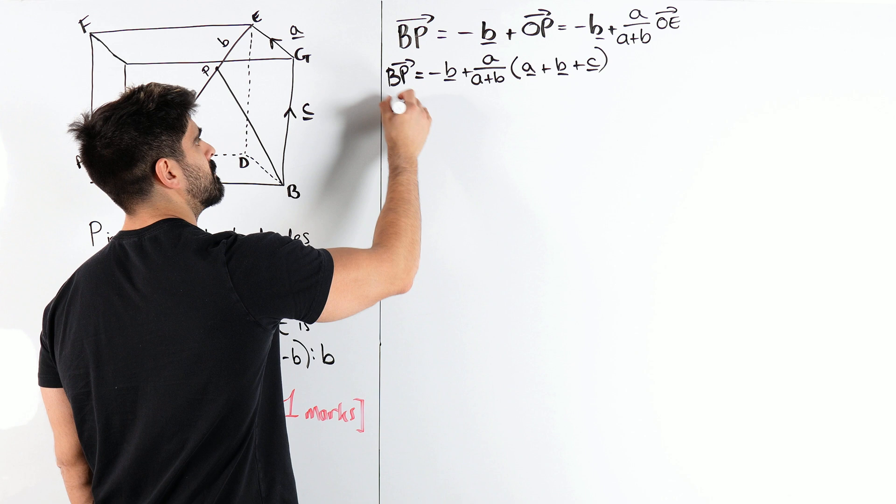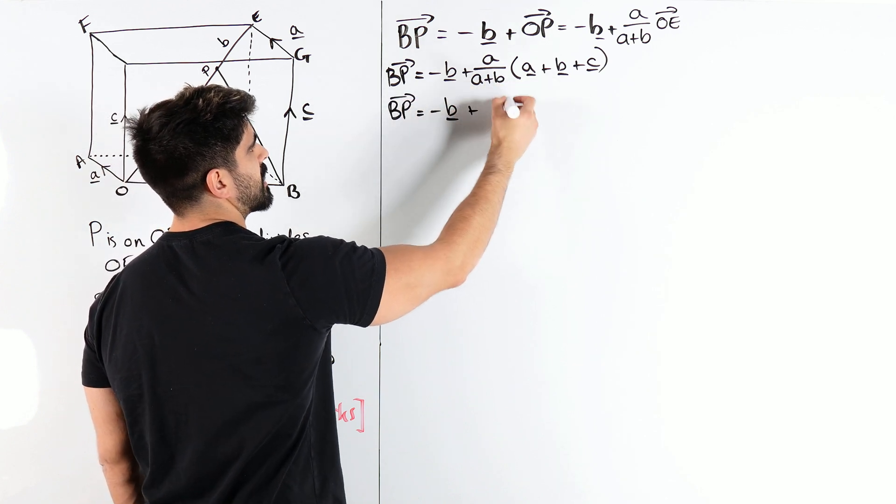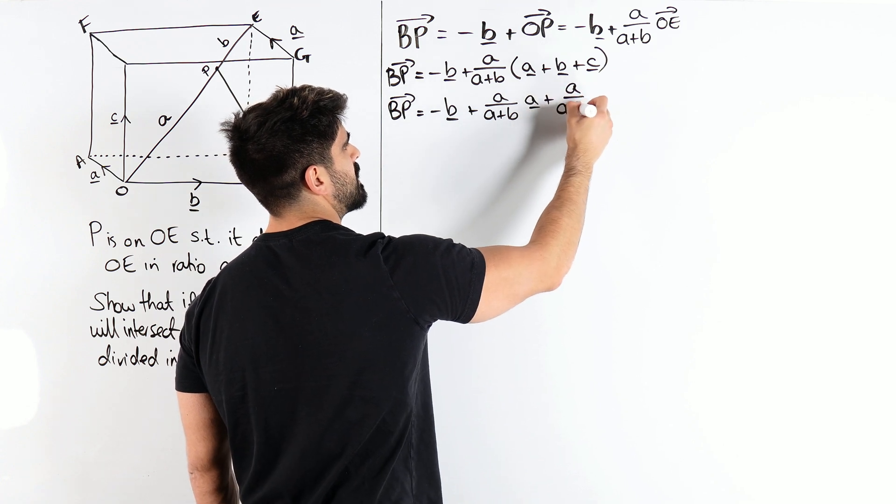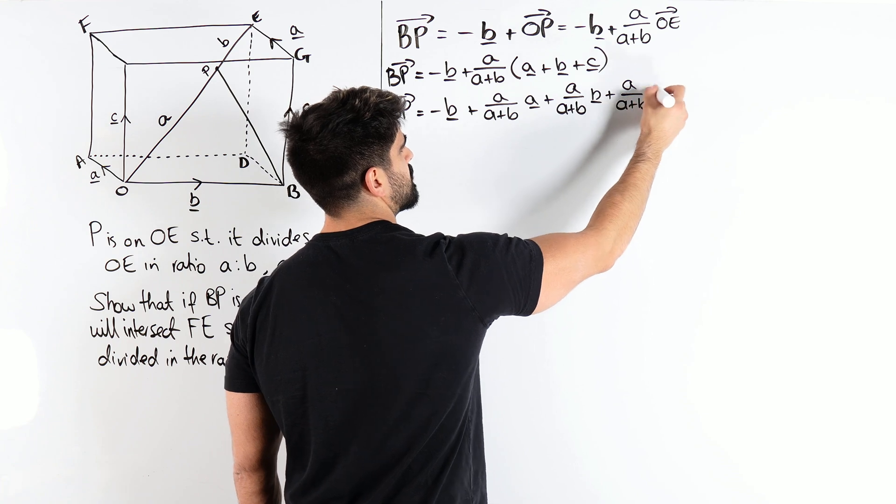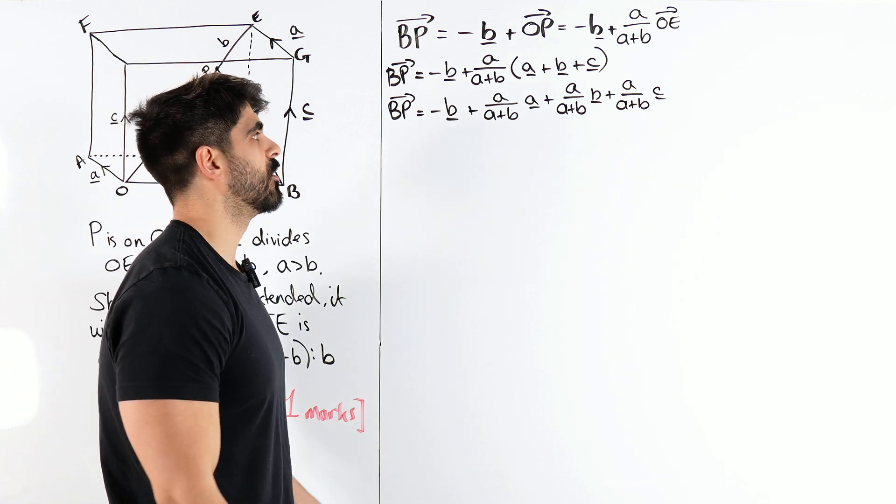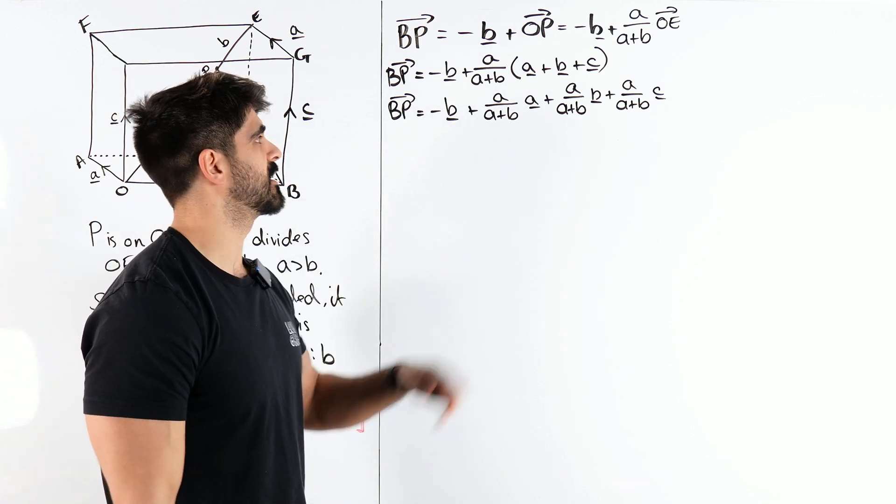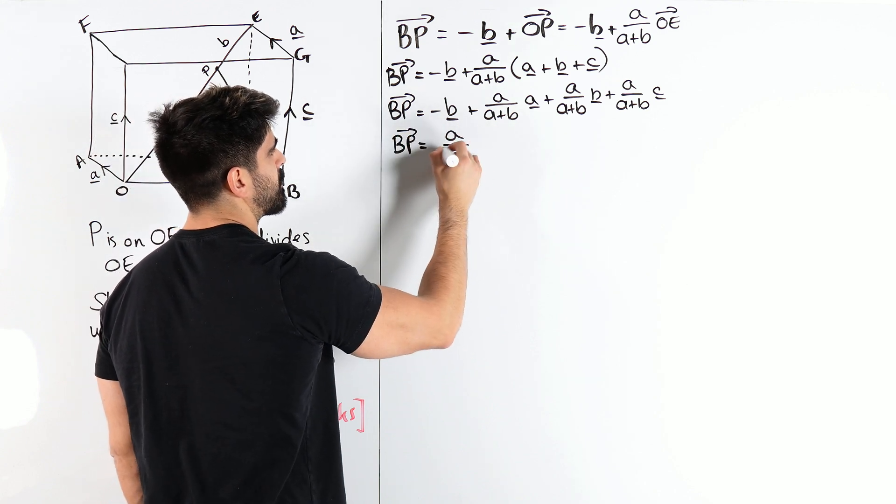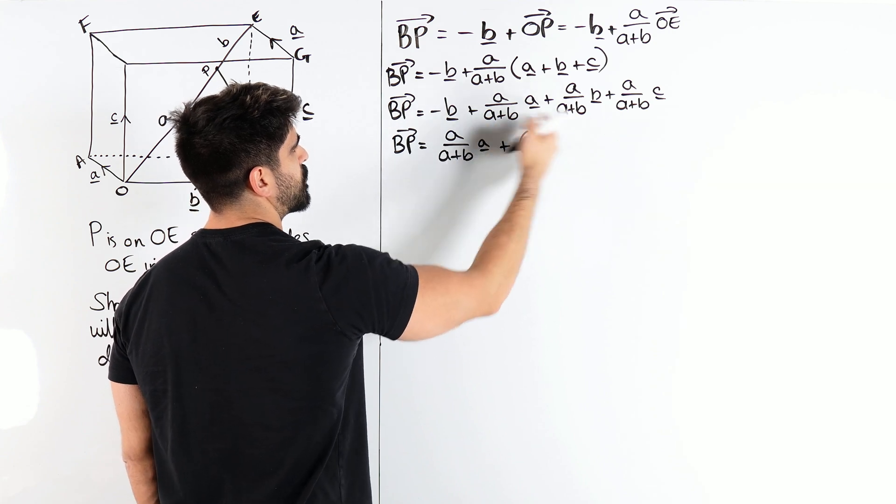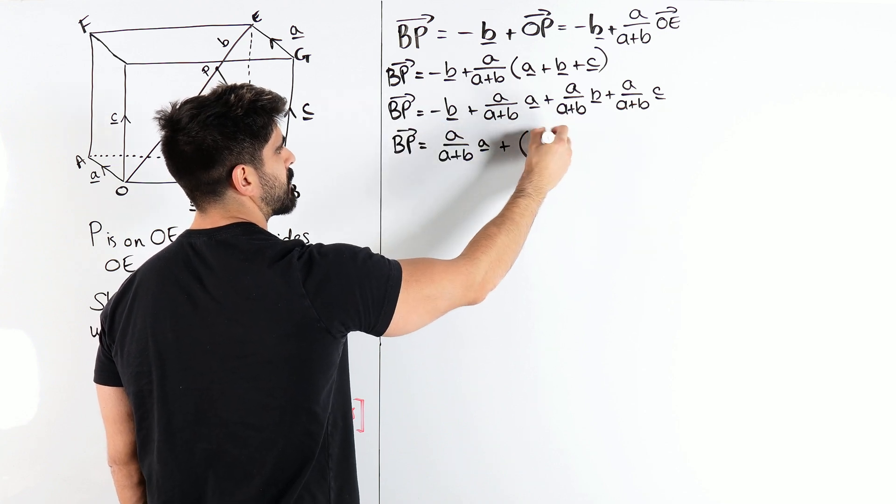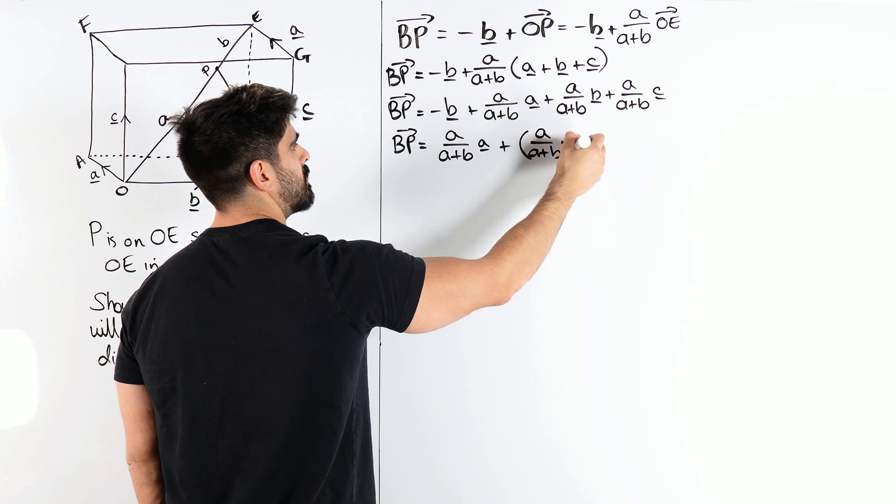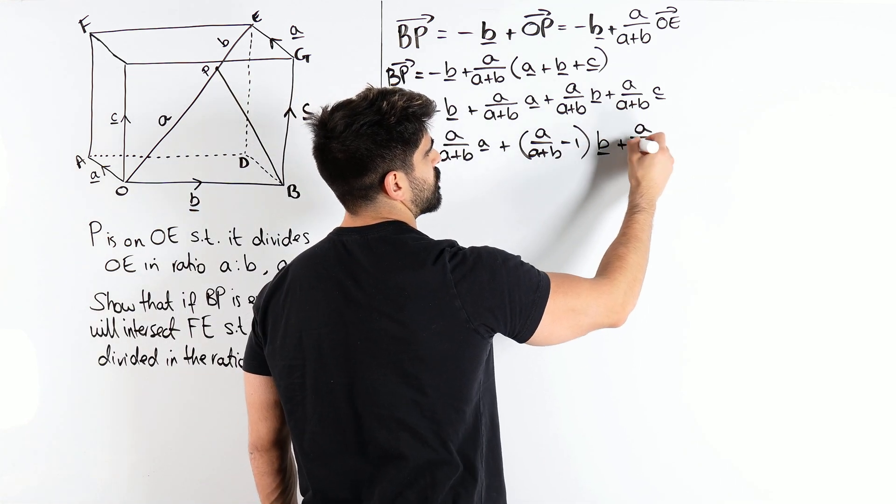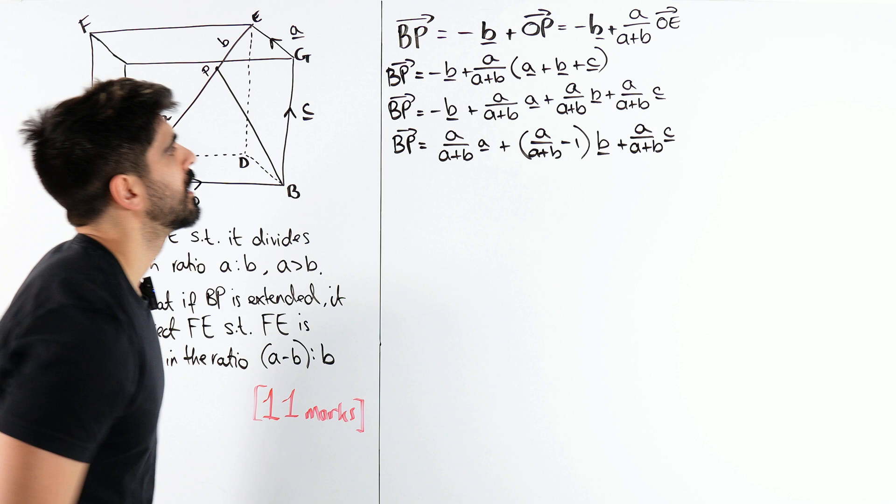Now, we're still not done yet, because now we're going to have to collect the like terms, and the only like terms that we can collect are the Bs. Alright? So, you've got BP is going to be A over A plus B, A, and this coefficient minus this, or this plus this, will be A over A plus B, minus 1, B. You're factorizing out B, you're just reading the coefficients. And then, we have A over A plus B, C. Alright, cool. So, we got there.